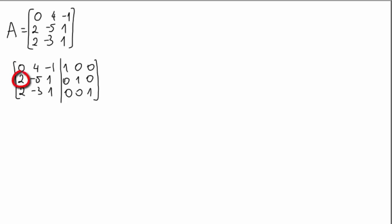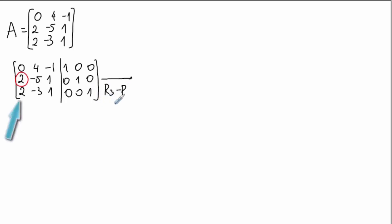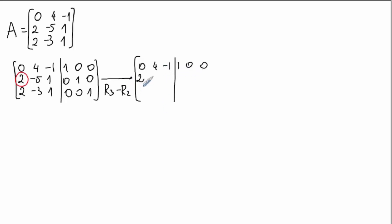We choose this 2 and eliminate every other entry in that column — this is called the pivot column. Above the pivot there is a 0, so no operation is needed. Below it we have a 2, so we subtract row 3 minus row 2 to get a 0 there. The first and second rows remain unchanged, and the third row is created by subtracting the second row.